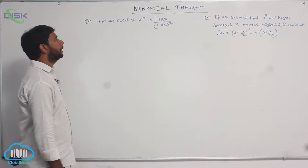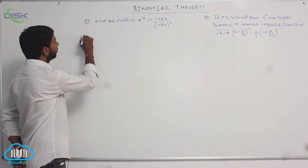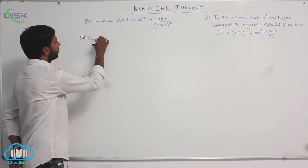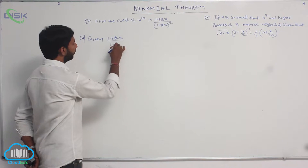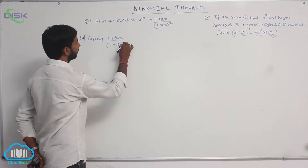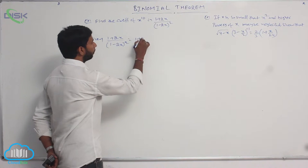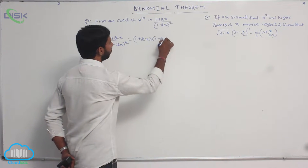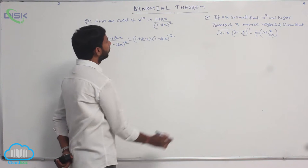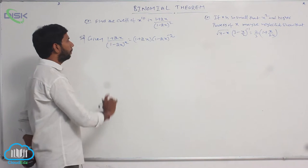Find the coefficient of x power 10 in the expansion of (1 plus 2x) by (1 minus 2x) whole square. The given expansion is 1 plus 2x by 1 minus 2x whole square, which is equal to 1 plus 2x into 1 minus 2x whole power minus 2.